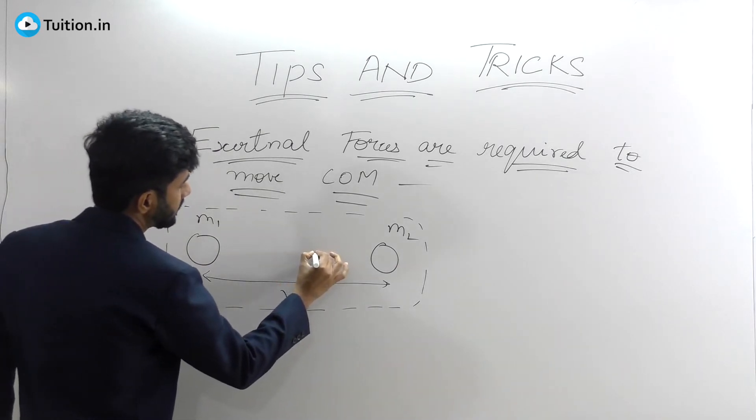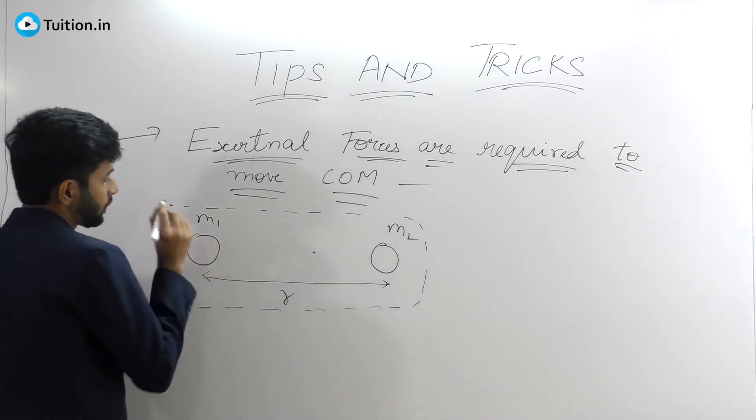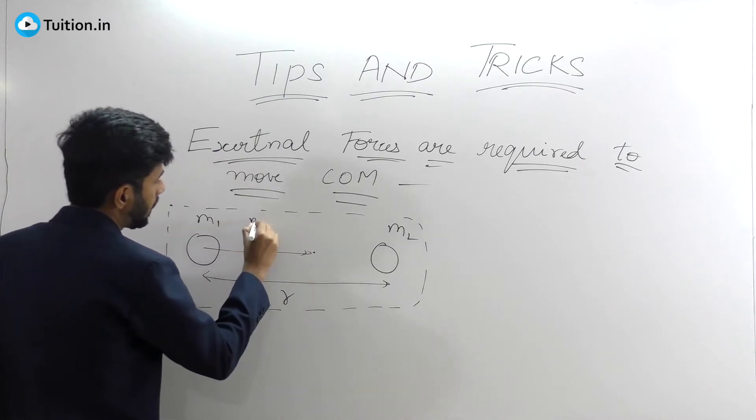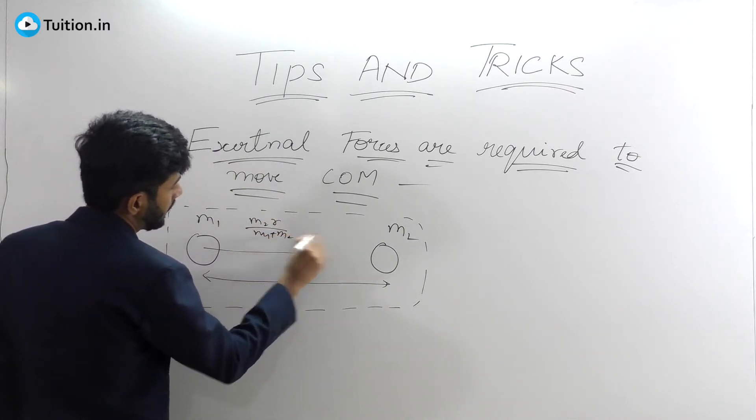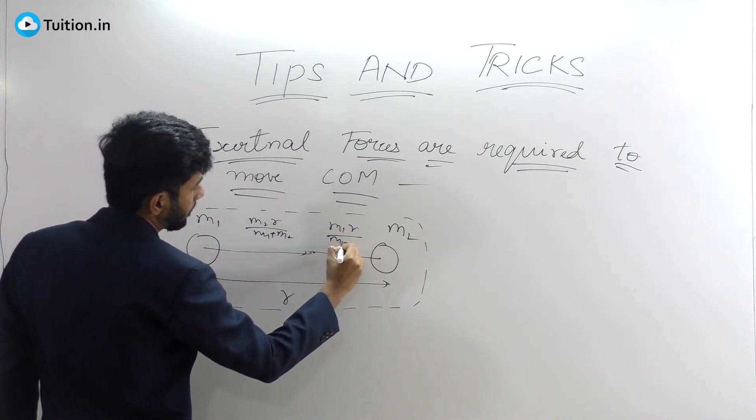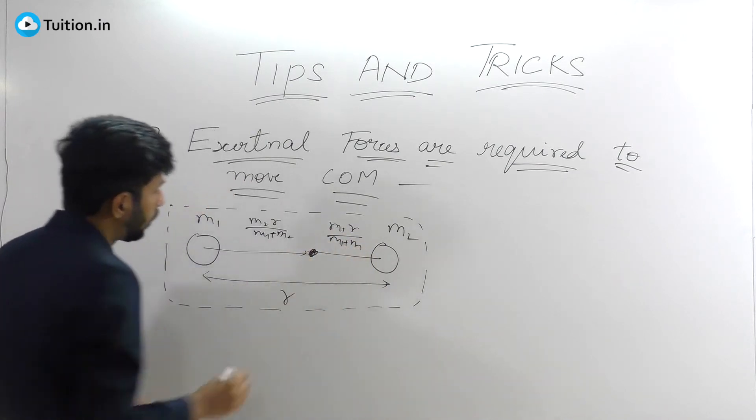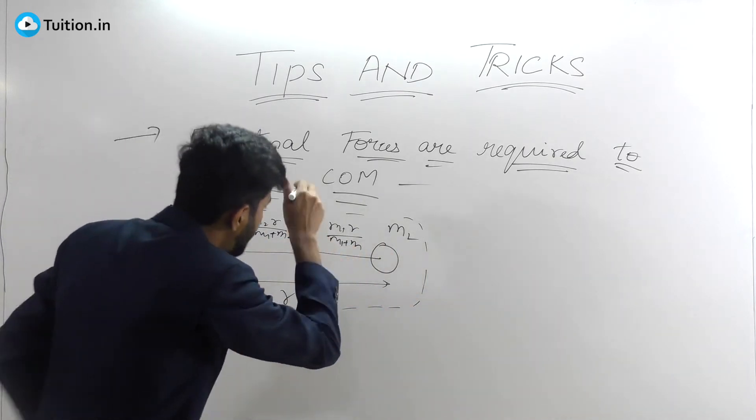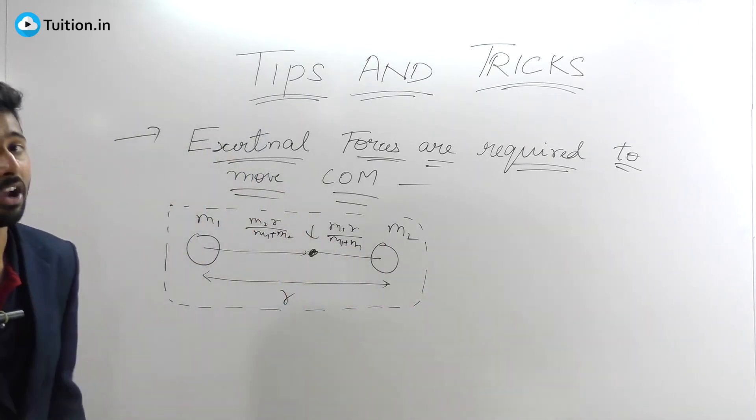This is your center of mass. What will be its distance from this? It will be m2r divided by m1 plus m2, and from here it will be m1r divided by m1 plus m2. Both of these masses will come and collide at this particular point only.